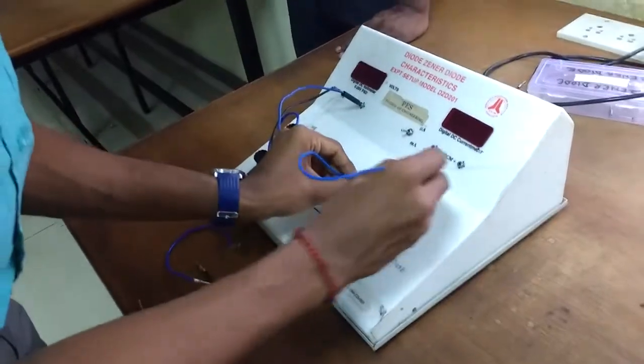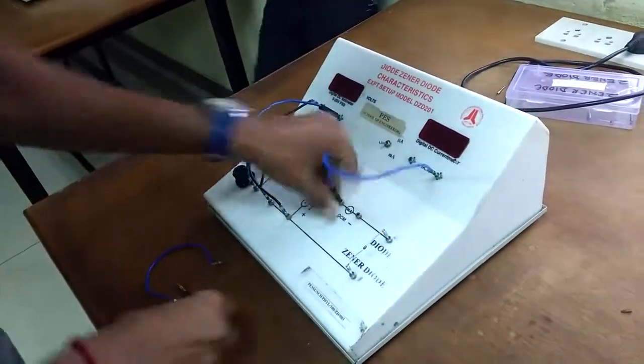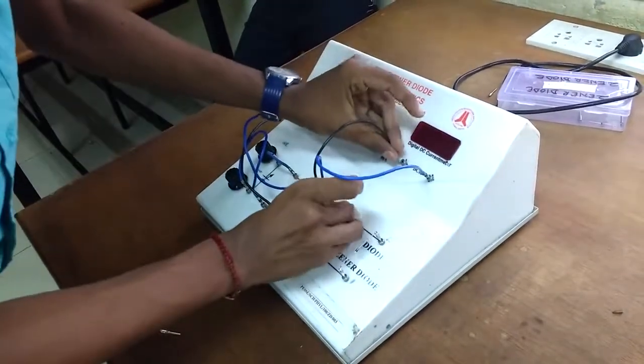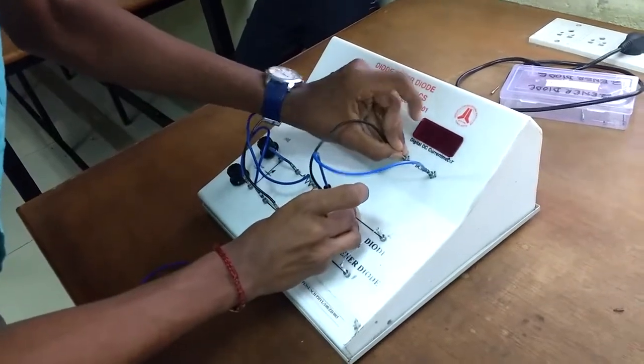Ammeter. Positive to positive. Negative to negative. This is the on mode.